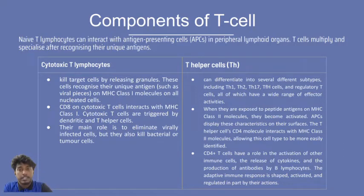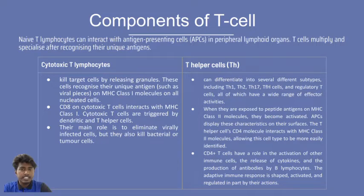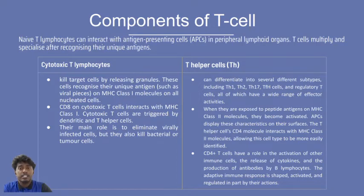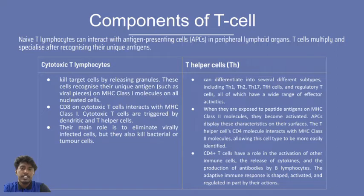There are three types of T-cells, also known as T-lymphocytes: cytotoxic T-lymphocytes, T-helper cells, and memory T-cells. Cytotoxic T-lymphocytes kill target cells by releasing granules. These cells recognize their unique antigen on MHC class 1 molecules on all nucleated cells. CD8+ T-cells interact with the MHC class 1 cells and are triggered by dendritic and T-helper cells. Their main function is to eliminate virally infected cells and also kill bacterial or tumor cells.